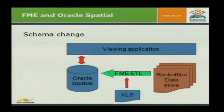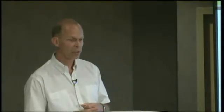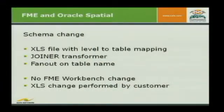So what we did was bring in an Excel spreadsheet — fairly simple — containing level number and table name. We bring in a joiner, joining this Excel spreadsheet to the features, and then afterwards we can use FME's standard fanout to write them to our schema, the application schema of Stromline, in which the table name is fixed. Really easy to maintain, because our customers don't know FME, but they do know Excel. So it was easy for them to just alter the spreadsheet and maintain their own application without us having to visit every time their back office changes.